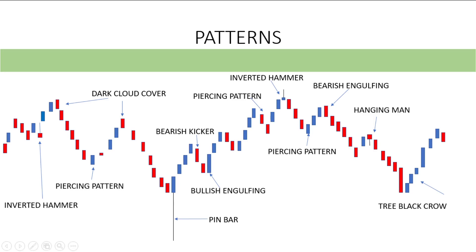Let's recap using this market. The market is going up, the market is going down, then we see an inverted hammer — we know that the market will go up. Dark cloud cover — we know that the market is ready to turn down. Then we see a piercing pattern, market going up; dark cloud cover, market going down. Pin bar — one of the most important candlestick patterns — telling us the market is going up. Then we see bearish kicker telling us the market is going down. Bullish engulfing telling us the market is going up.